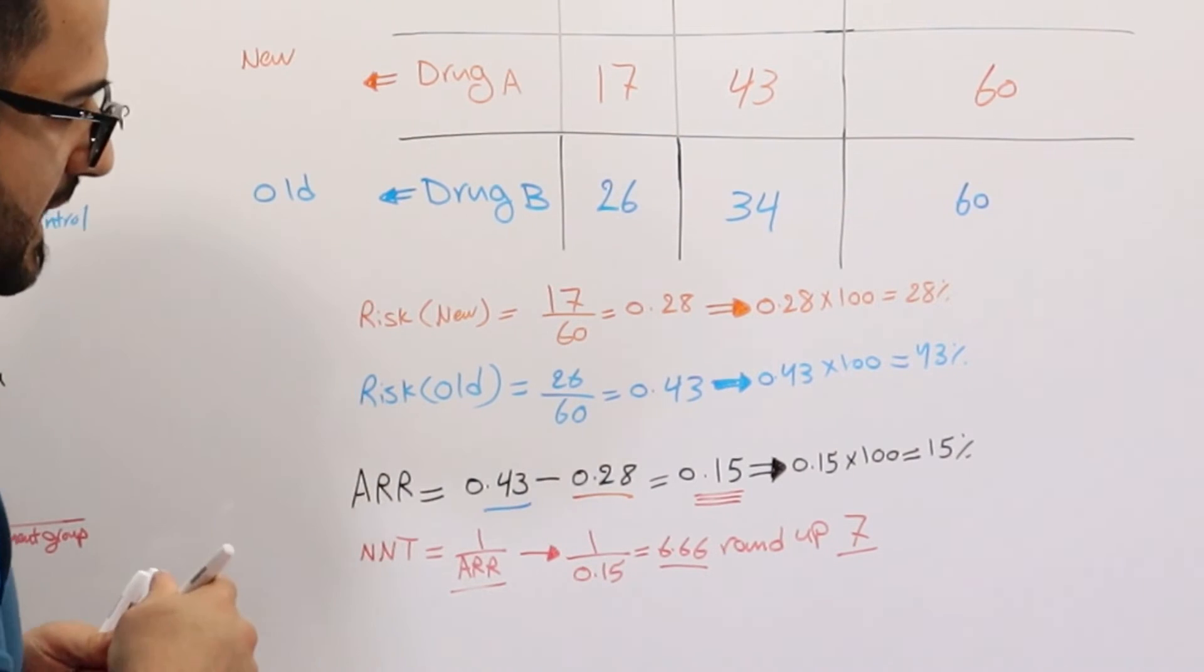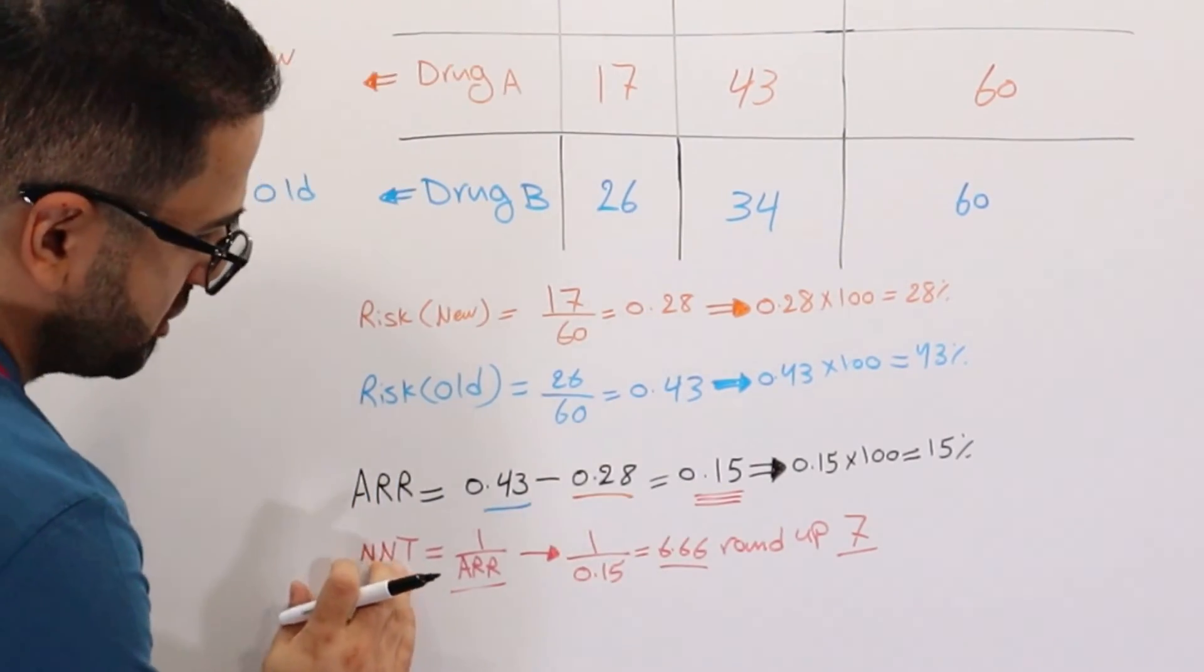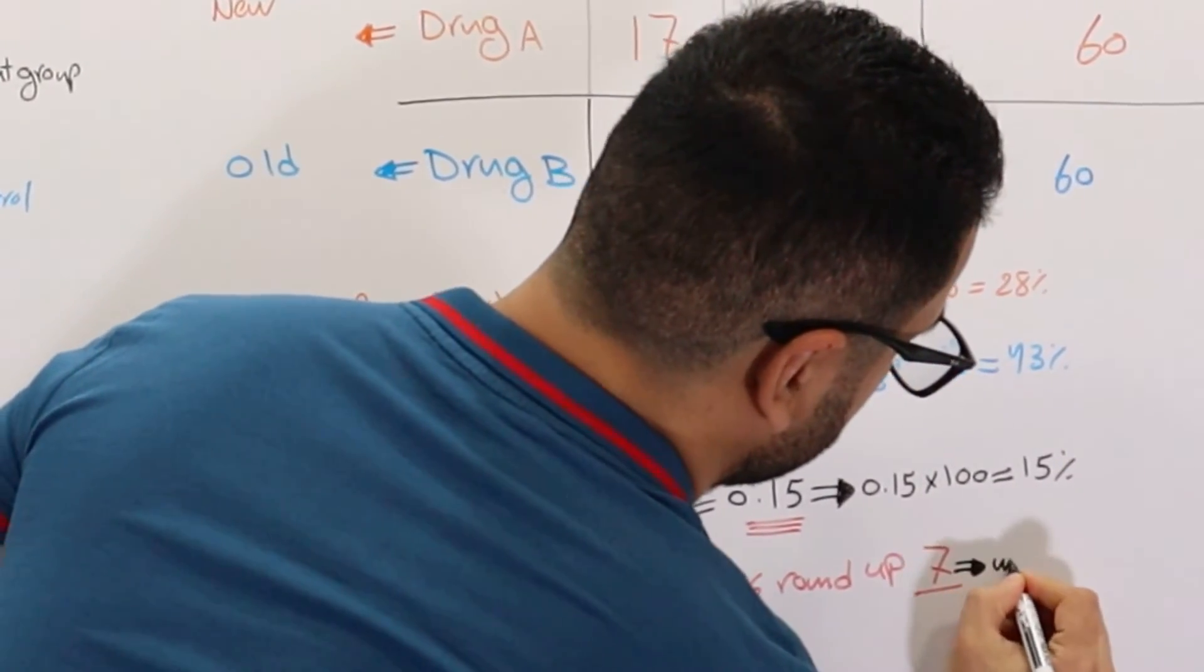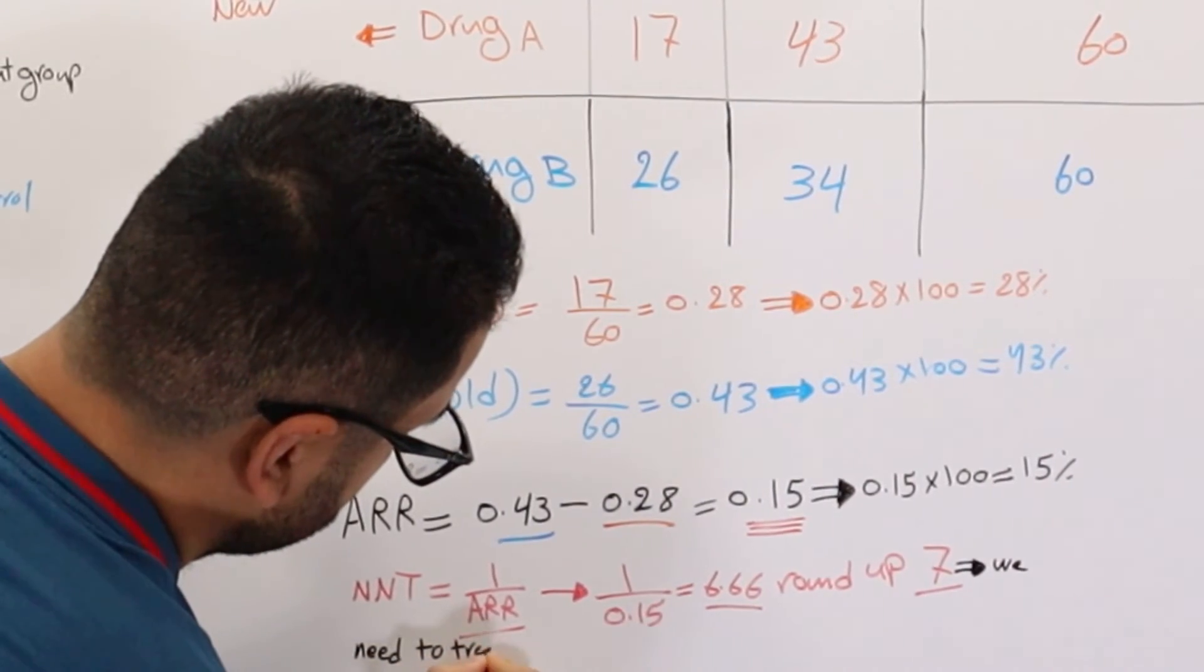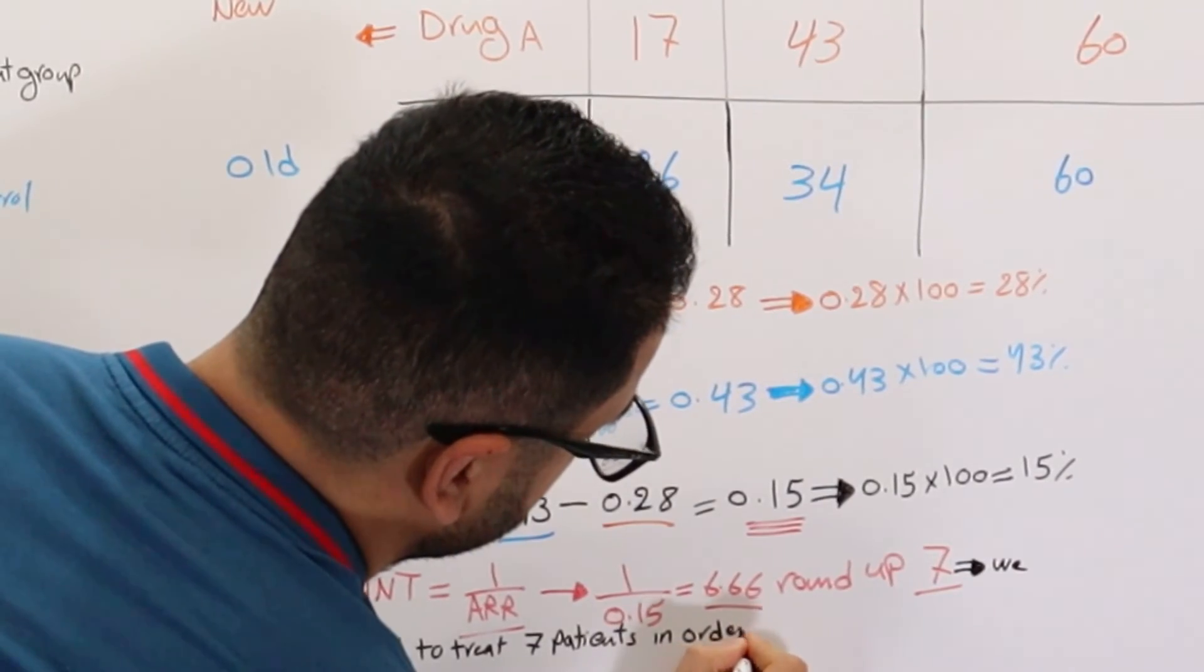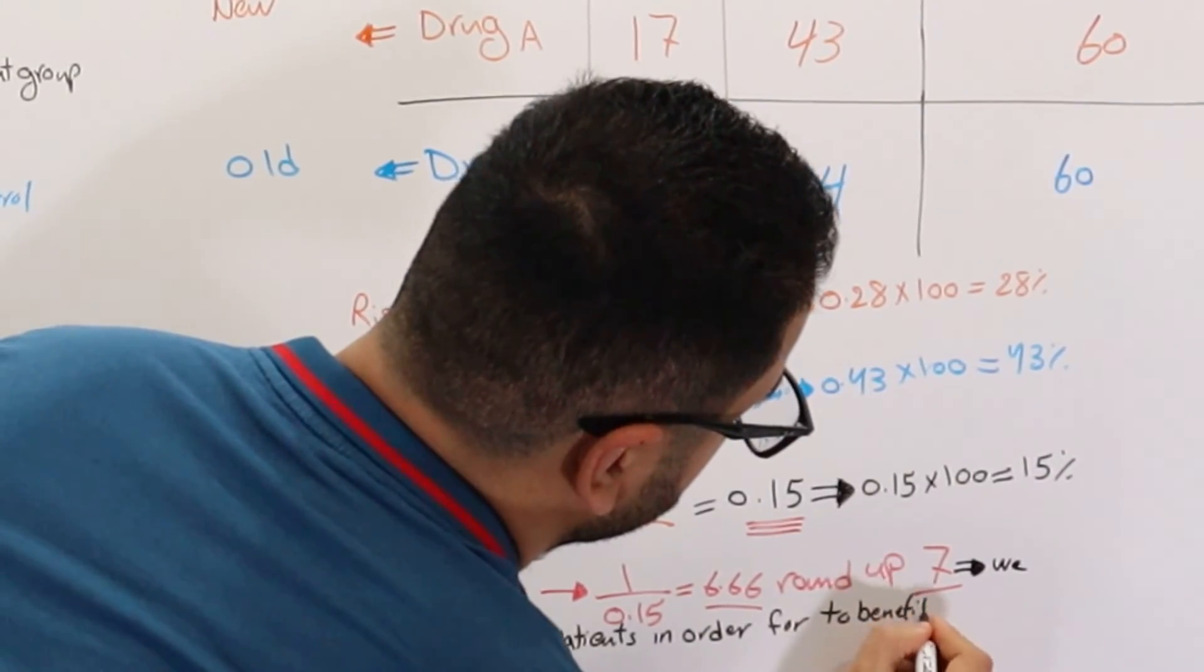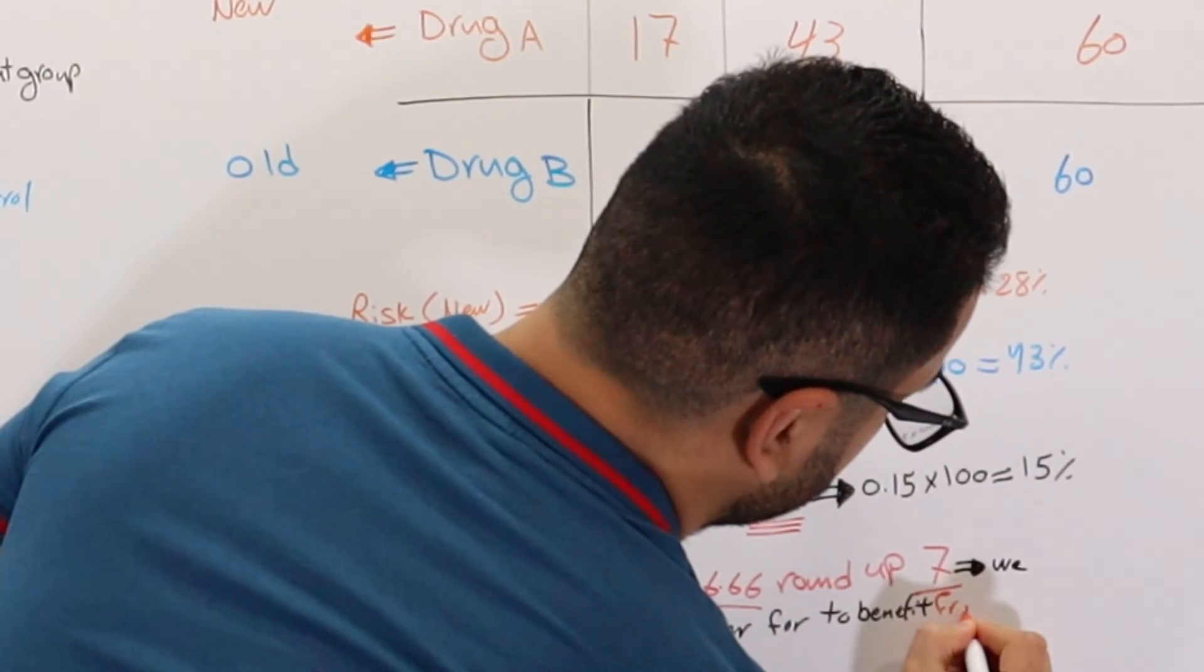So what does this mean? This means that, very simply, number needed to treat is 7. So we need to treat 7 patients in order for one to benefit from the new medication over here, which is drug A.